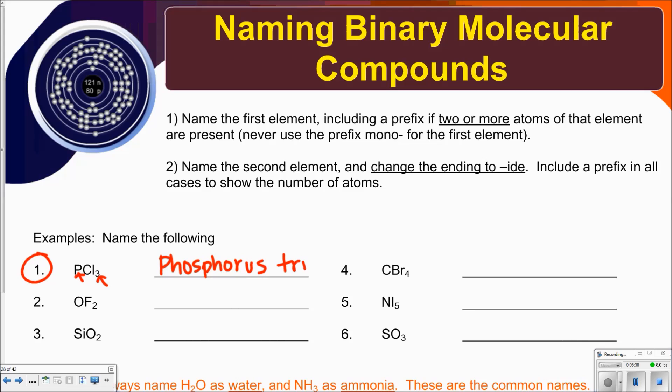So tri is the prefix for three, and then I change this to chloride. So it shouldn't even sound right if you say trichlorine. That's just weird. You change the ending of the second word to -ide.